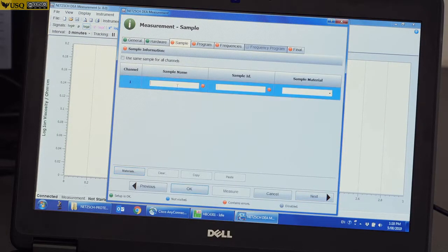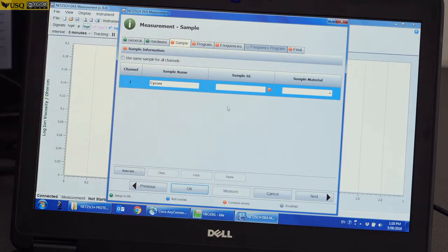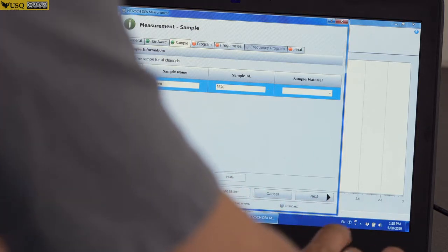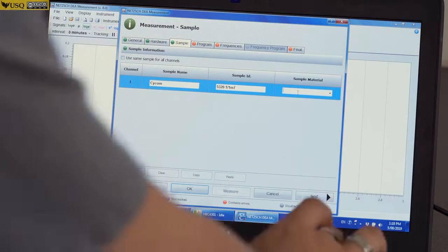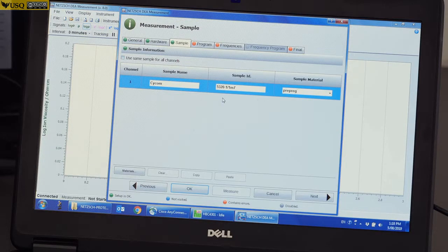Next, we key in the sample name which is Psycom, sample ID which is 5320-1-1M7, sample material is prepreg. Once we fill up all the information, it will become green. Then, we go to the next.